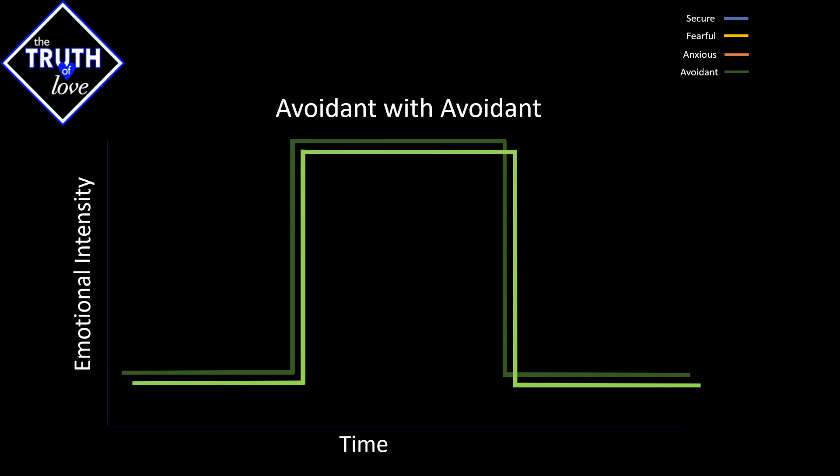This is why avoidants don't tend to be very long-term with other avoidants, and they tend to be more closely attuned for the fearfuls, or more importantly, the anxious attachment styles.